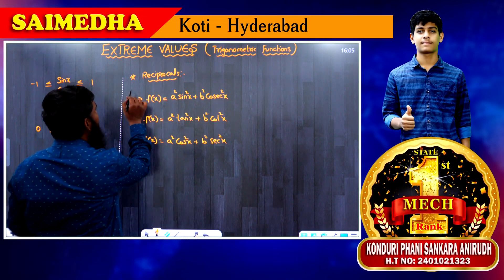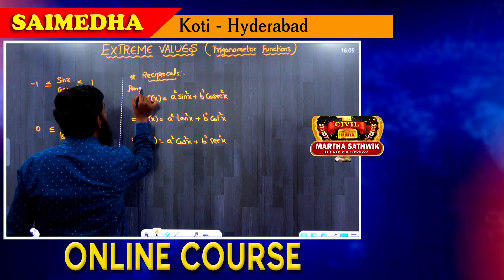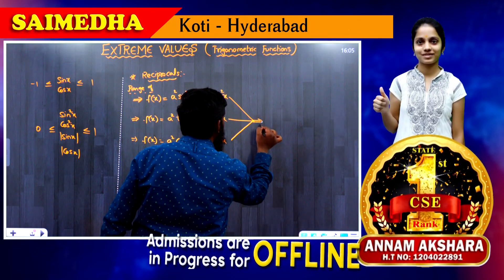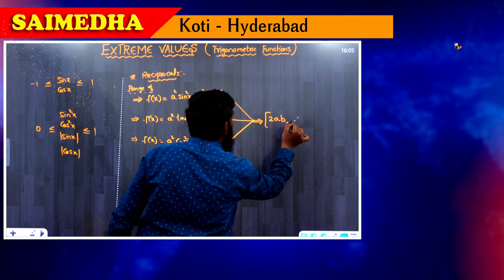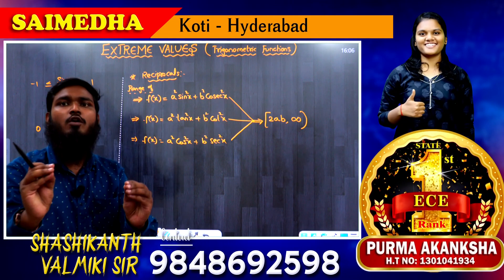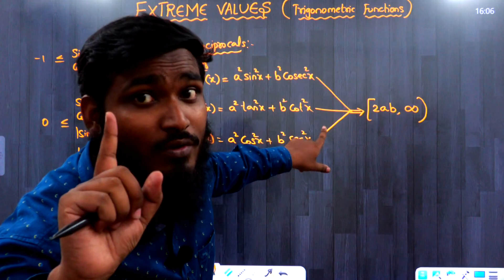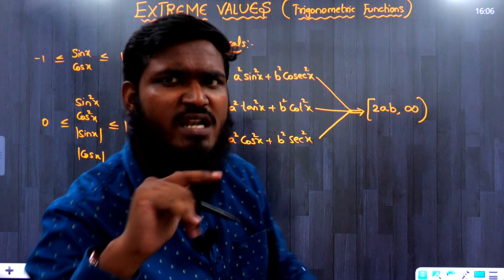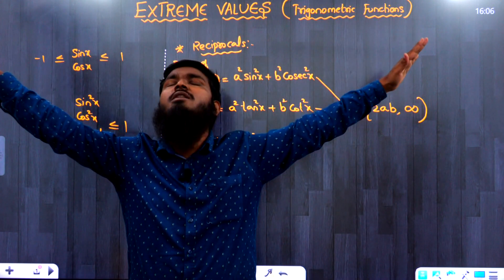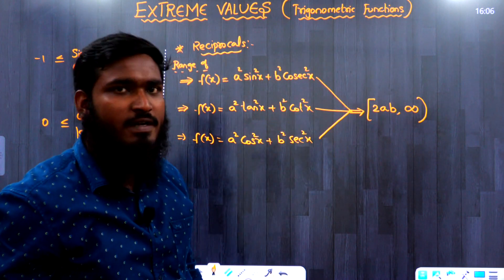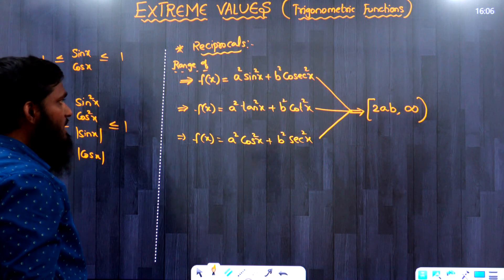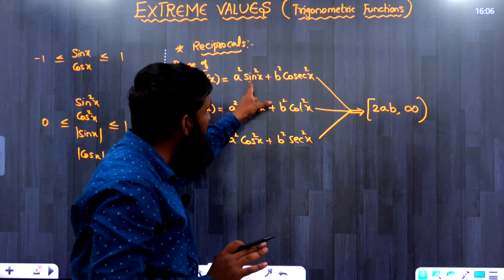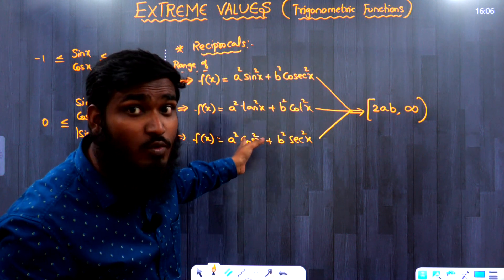For these three functions, the range is [2ab, ∞). The starting value is the minimum value and the upper bound is infinity. Notice that sin²x and cosec²x are reciprocals of each other, and tan²x and cot²x are also reciprocals of each other. The two functions in each pair must be reciprocals.